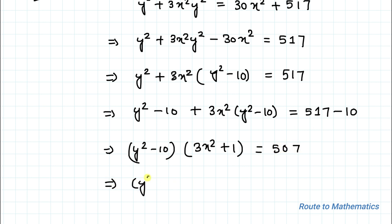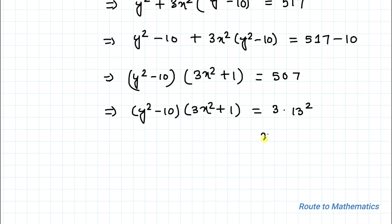So here we can factor out (y² − 10), giving us (y² − 10)(3x² + 1) = 507. If we factorize 507, we get 3 × 13², which equals 3 × 169.